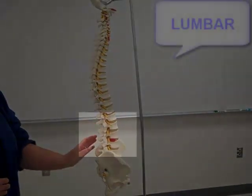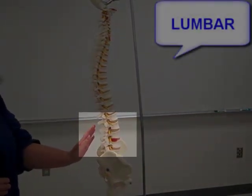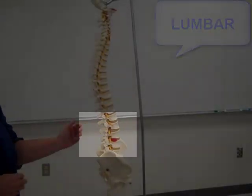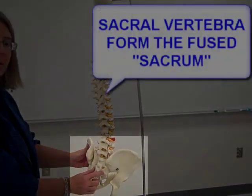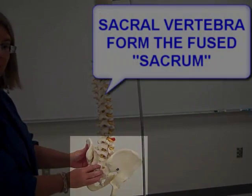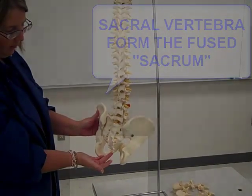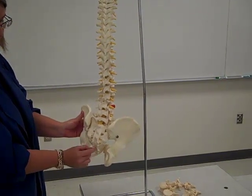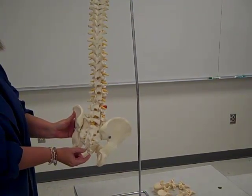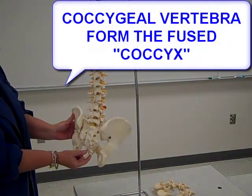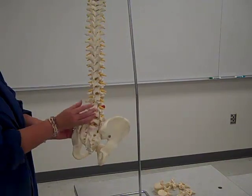In your lower back, we have five lumbar vertebrae — very lower back, supporting your lumbar region. Between the hips, we have sacral vertebrae, which form the sacrum — one big fused structure. And then we're all familiar with the tailbone, which is the very end portion of the vertebral column. Those are the coccygeal vertebrae, which form the coccyx, or the tailbone.